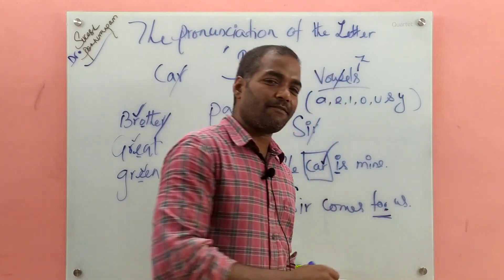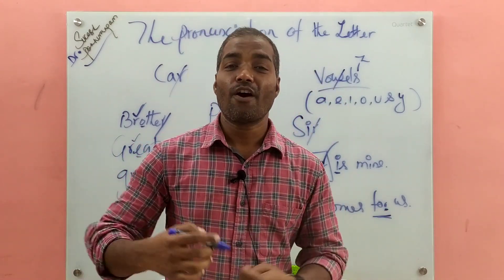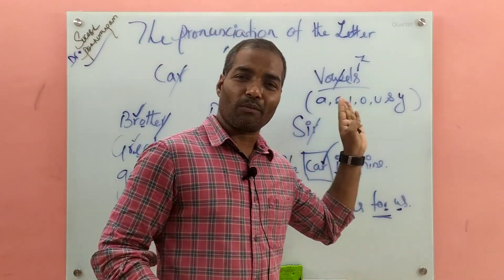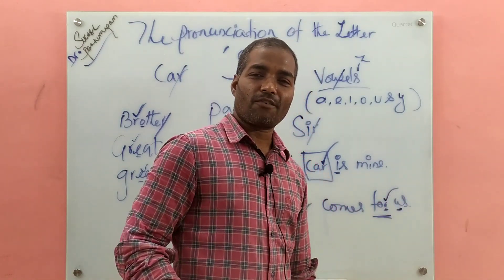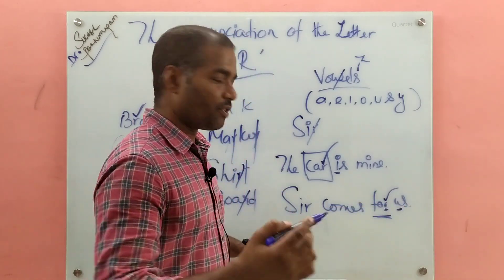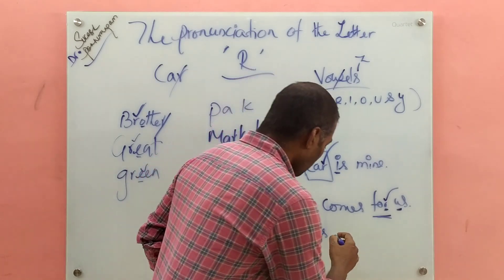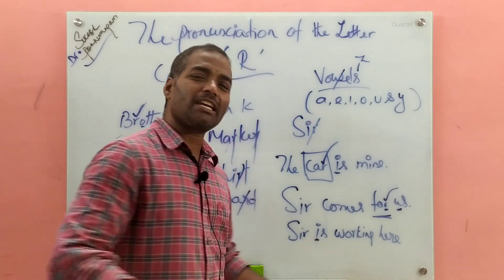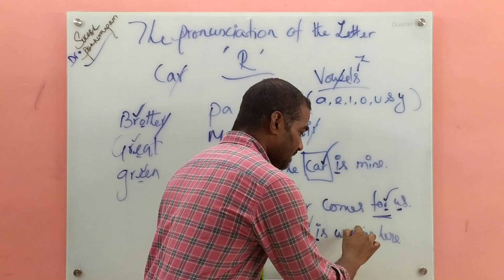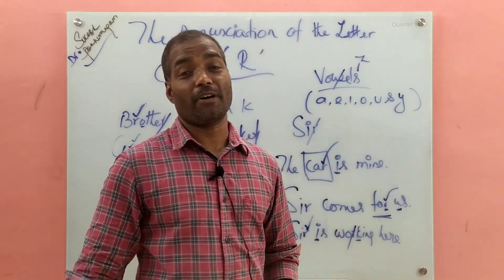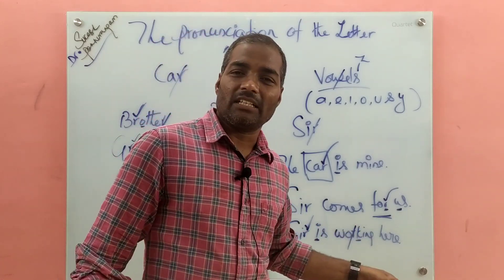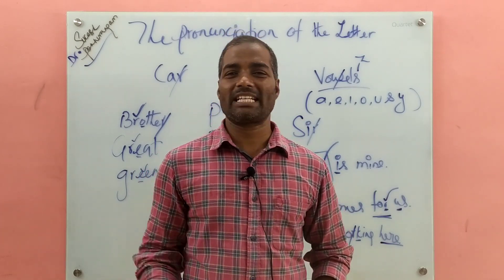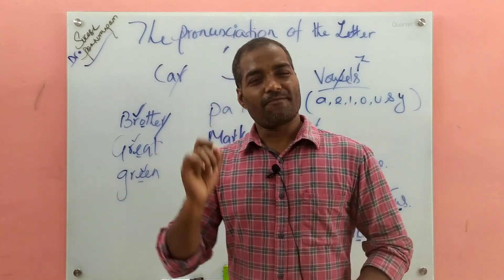For example, 'sir comes for us' — here 'for' individually is pronounced with a silent R, like 'for.' But the next word begins with 'u,' which is a vowel, so you pronounce the R: 'for us.' Sir comes for us. Or 'sir is working here' — the next word 'is' begins with a vowel, so you say 'sir is.' But 'working here' — the word 'here' is actually pronounced with no R sound at all. This is completely British English.